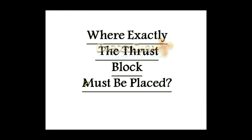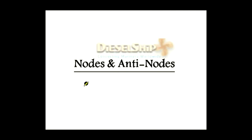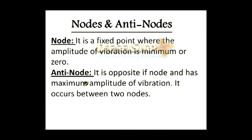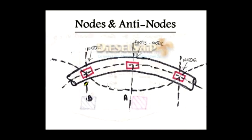To understand thrust block placement, we need to know about nodes and antinodes. A node is a point where there is no vibration, or the amplitude of vibration is zero. An antinode is just the opposite — it is a point where vibration is maximum on the shafting system. Looking at the exaggerated shafting system's vibratory characteristics, we have two nodes and one antinode on this vibratory curve. The antinode is the point where it vibrates maximum, while at the nodes there is no or minimal vibration.